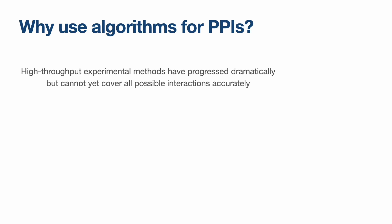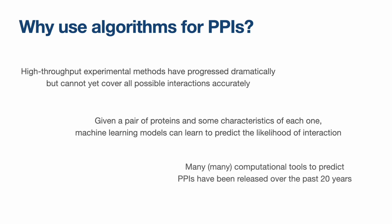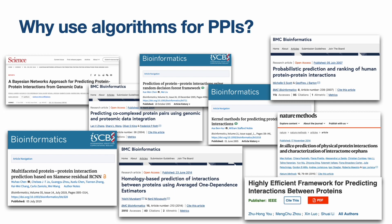But we are not yet at a point where they can map all possible interactions accurately. So the idea is to use a pair of proteins, have some information about each protein, and feed that into a model that can learn to recognize interacting proteins. There have been a lot of models released along these lines over the past 20 years — here are some examples.